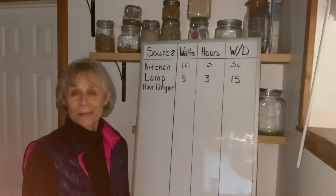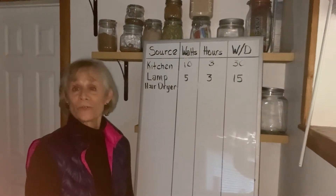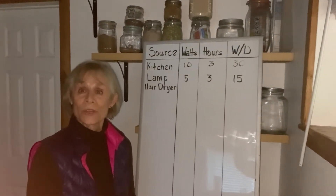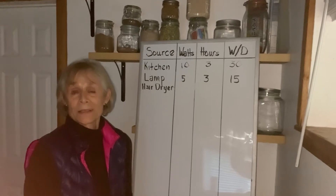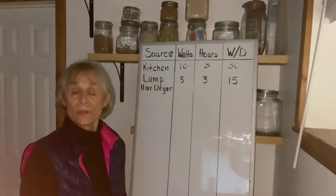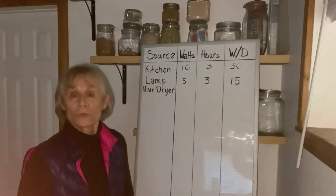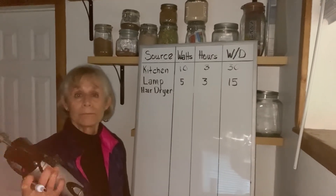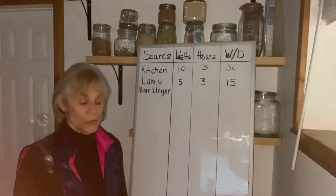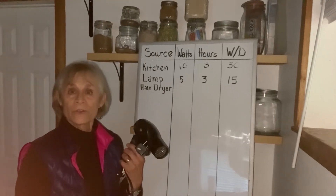Let's talk about appliances. And yes, even off-grid you're going to be using appliances. Everyone uses different ones — like a toaster, a hand mixer, or a hairdryer.